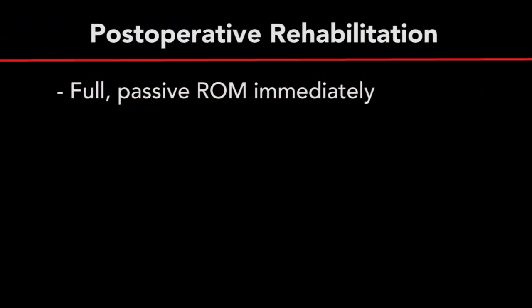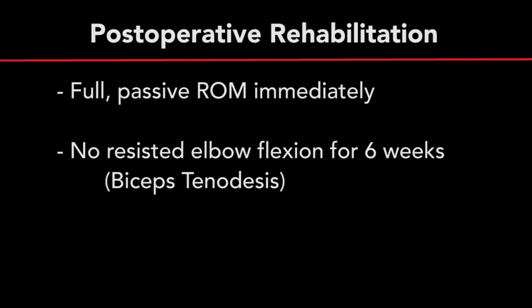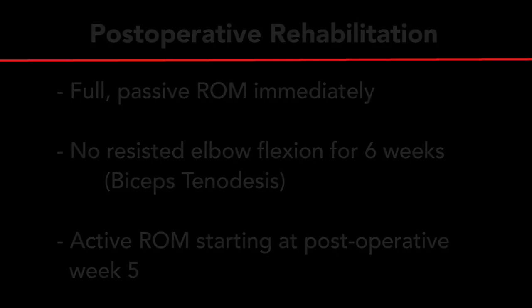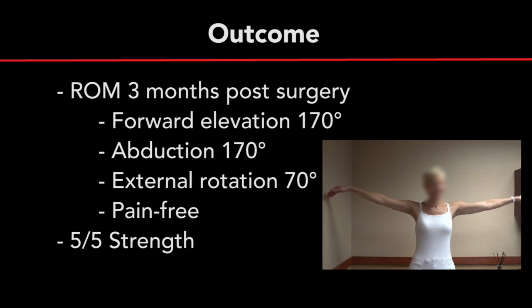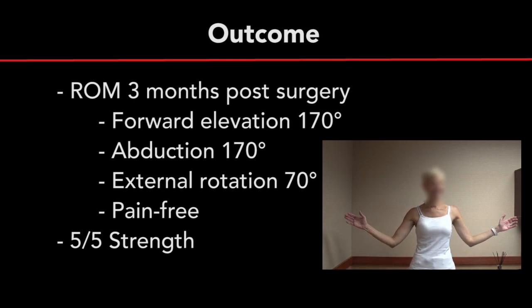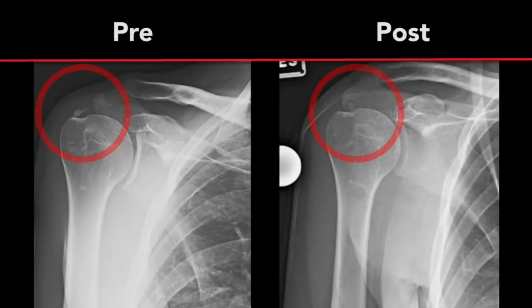Postoperatively, the patient was allowed full passive range of motion immediately with no resisted elbow flexion for six weeks, secondary to a concomitant biceps tenodesis. Active range of motion was initiated at the five-week mark postoperatively. Three months following surgery, the patient demonstrated pain-free, full, active forward elevation, abduction, and external rotation with five-out-of-five strength with isolated supraspinatus and external rotation strength testing. Postoperative radiographs demonstrate successful excision of all calcium deposits proximal to the greater tuberosity.